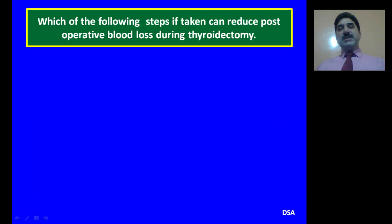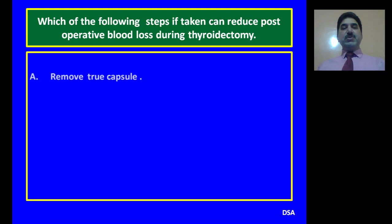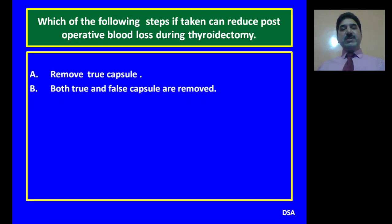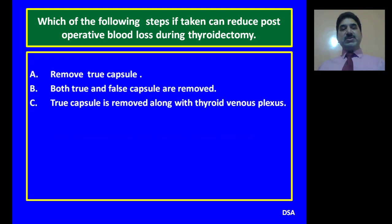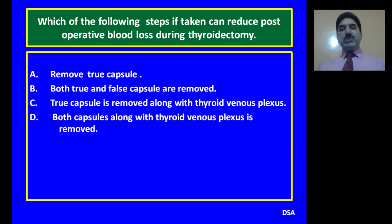Question 5: Which of the following steps, if taken, can reduce post-operative blood loss during thyroidectomy? A. Remove the true capsule. B. Both true and false capsules are removed. C. True capsule is removed along with thyroid venous plexuses. D. Both capsules along with thyroid venous plexuses are removed. C is the correct option. True capsule is removed along with thyroid venous plexuses.